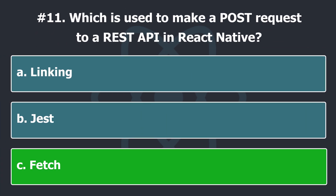React Native provides the Fetch API for fetching data from remote servers and APIs. It's quite similar to browser APIs such as Fetch and XMLHttpRequest. The API is promise-based, so you can also use it with the async/await syntax.